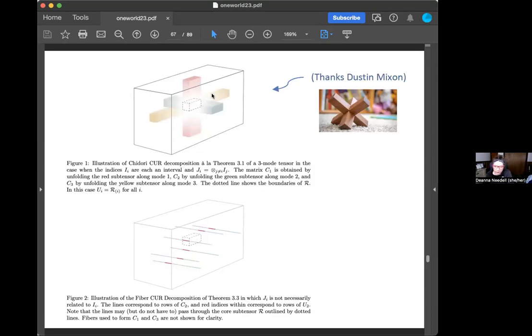We get a tensor decomposition based on actual sub-data of your original tensor. The second one is a Fiber CUR. You can see where that name comes from. In this case, we have a bit more flexibility. The lines here correspond to rows of C, the C matrices, and the red indices within them correspond to rows of the U matrix. In this case, the lines are flowing around. They don't have to intersect as a core, unlike in this case where they do. So a very high level overview. But just to say that we have been able to develop the CUR decomposition in the tensor case, I think it will be very useful going forward given how useful it is in the matrix world.